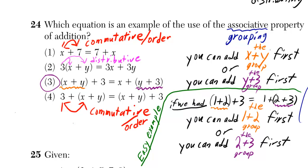In other words, we're adding x plus y first on the left side, but on the right side we're adding y plus three first, or you could say it as the y plus three group as indicated by the parentheses around the y plus three.